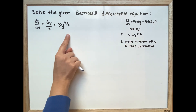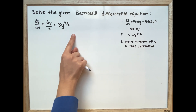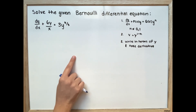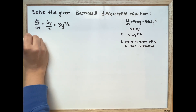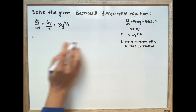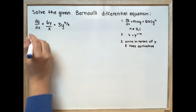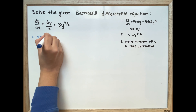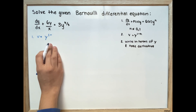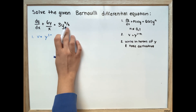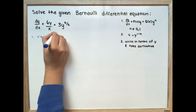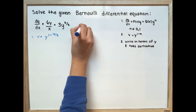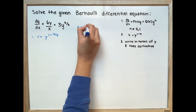Looking at this equation, it is already in the required format. So our first step is to set v equal to y to the power of 1 minus 4 over 3, because we are setting n equal to 4 over 3.